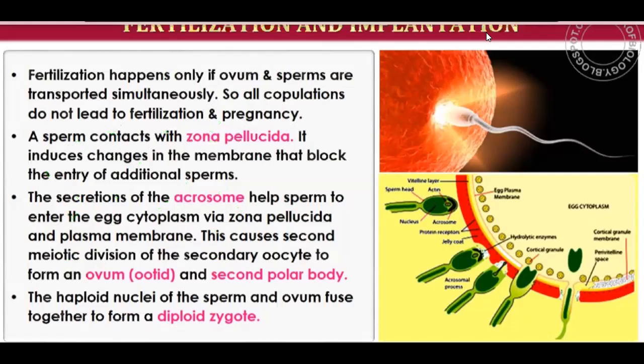The secondary oocyte is arrested at meiosis 2. When fertilization occurs, the second meiotic division completes, forming the second polar body. Then the haploid nuclei of the sperm and ovum fuse together to form a diploid zygote.